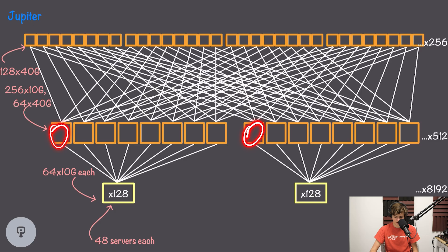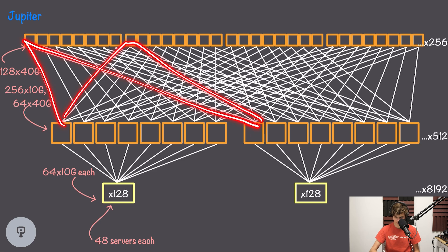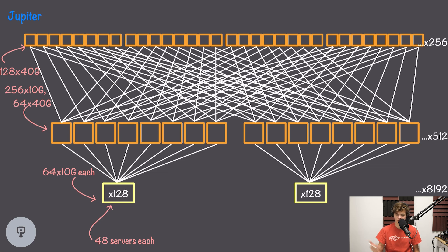The size of this network has increased dramatically — from 10 terabits per second in the initial design to 1.3 petabits per second in Jupiter. Throughout this evolution, another challenge was routing across the network. Traffic between any two aggregation switches can flow through 32 separate spine switches. The switch has to load balance traffic across all 32 connections and detect when one goes down due to a link or switch failure.